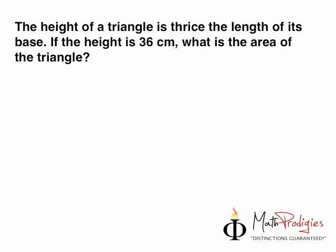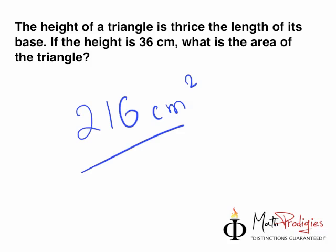Yesterday's question was: the height of a triangle is thrice the length of its base. If the height is 36 cm, what is the area of the triangle? The answer is 216 cm squared. And if you got that right, you are a math prodigy — good job!